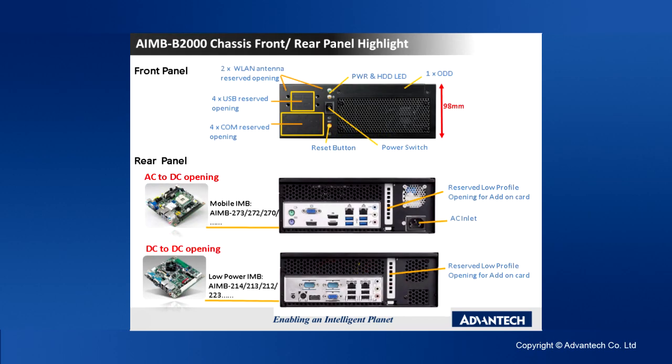Looking at the AMB-T2000 from the front panel: there are reserved slots for USB (4x), COM port (4x), Wi-Fi or 3G antenna (2x), and new reserved openings. You also have an optical drive bay, LEDs for power and HDD, a reset button, and a power switch. The height is 98mm — double that of the AMB-T1000.